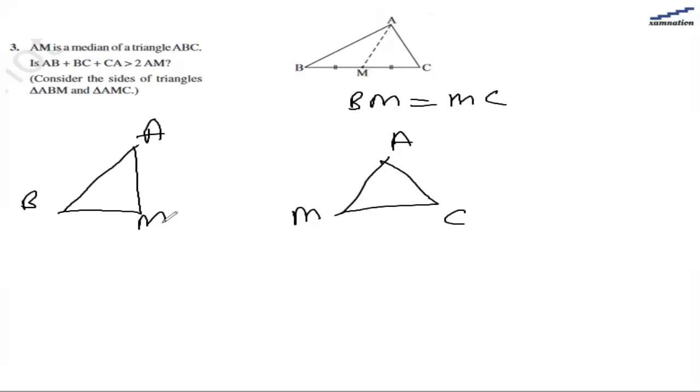This property states that the sum of two sides is greater than the third side. So for triangle ABM, we have AB plus BM is greater than AM.